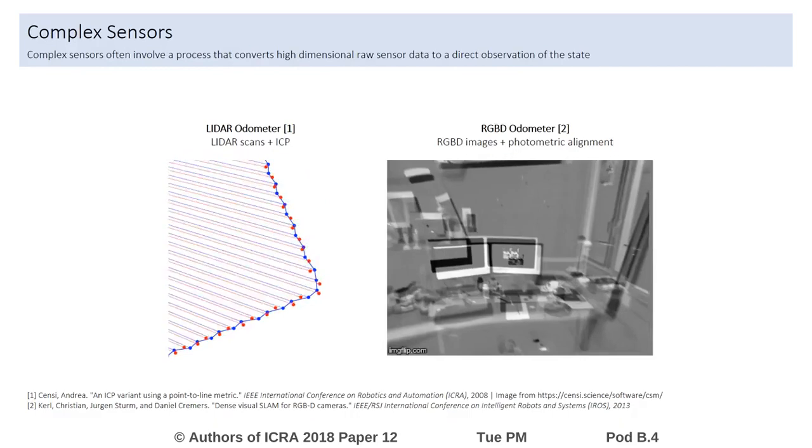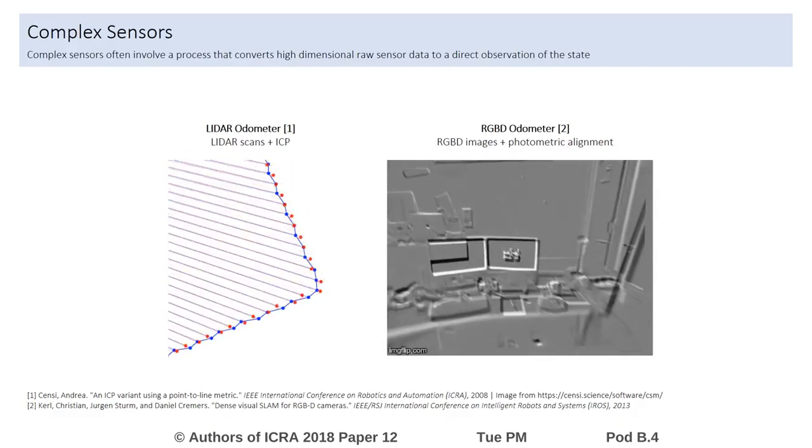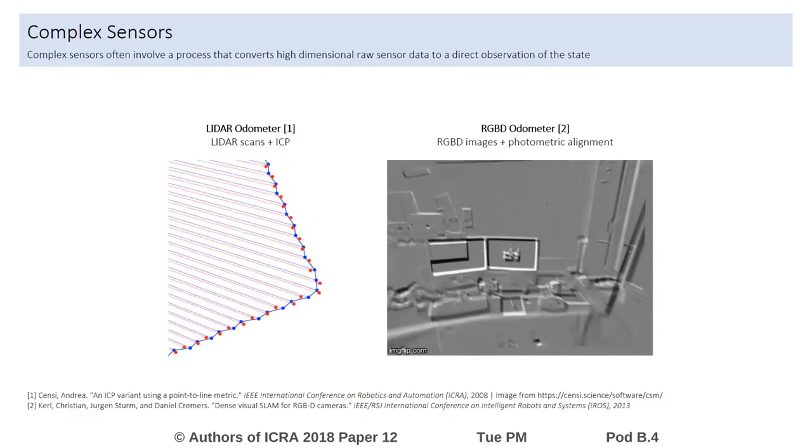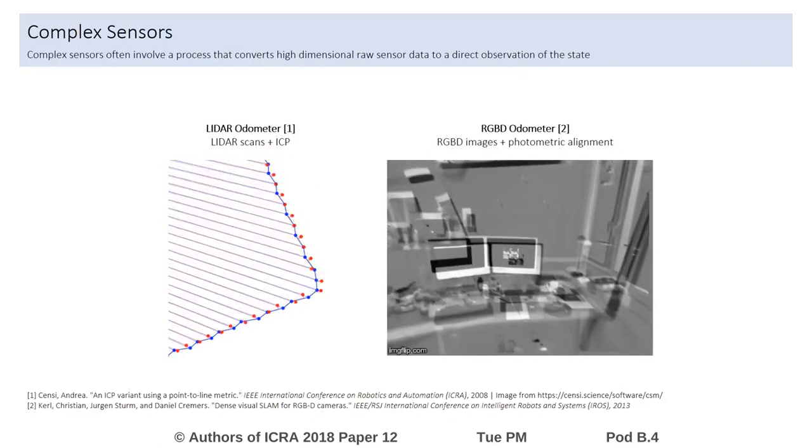For example, a LIDAR or RGBD-based odometry sensor may utilize high-dimensional raw data in the form of planar laser scans or depth images to compute a relative motion using an alignment process.